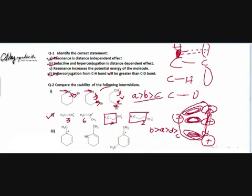Then we come down to hyperconjugation. In the first intermediate, the plus charge enjoys hyperconjugation from the methyl group. In the second intermediate, the plus charge is at C1 — after resonance it bypasses C2 and comes to C3, and the methyl group is on C2. That means the plus charge will not enjoy hyperconjugation from the methyl group. So the extent of hyperconjugation is greater in the first intermediate; there is no hyperconjugation by the methyl group in the second intermediate because the plus charge does not come in front of the methyl group — it goes from C1 to C3.